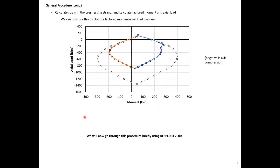We can now use the information from the previous table to plot our factored moment-axial diagram. The light blue and light orange are unfactored curves, and the orange and blue curves are our factored curves. You can see where we're tension controlled in the blue, and the rest of the curve is compression controlled. We could then use this to check our factored moment-axial curve against our ultimate applied loads when designing the section.